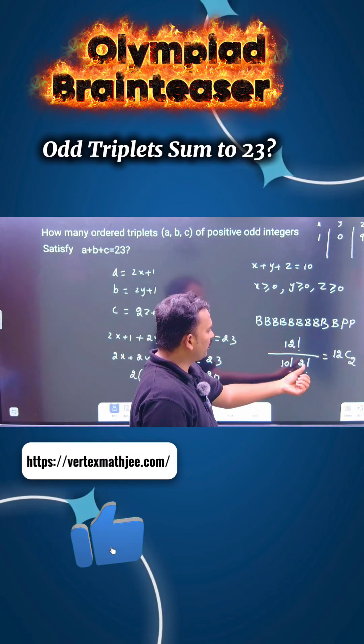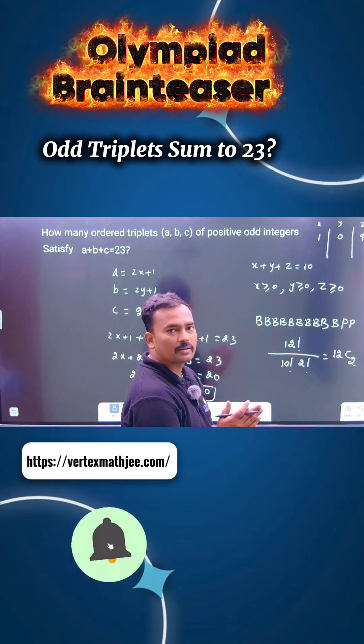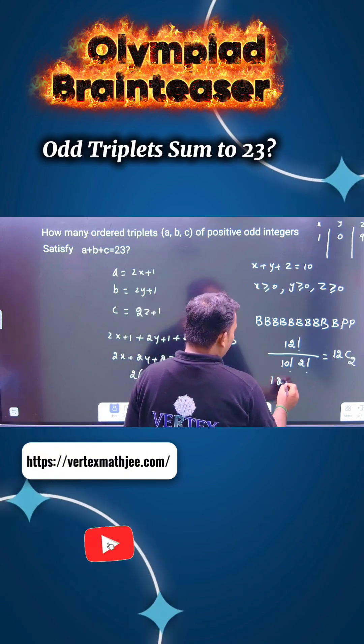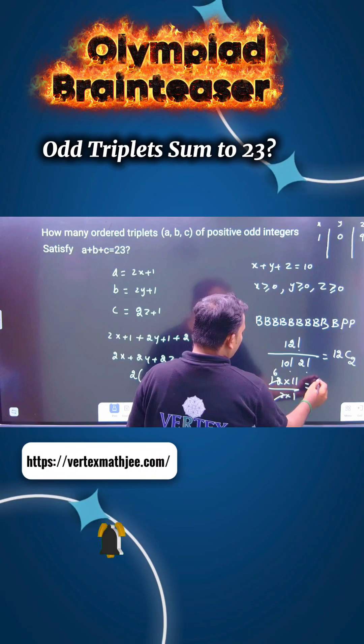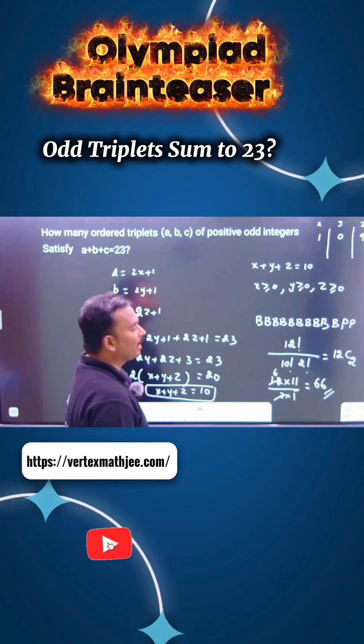12 factorial by 2 factorial, 12 minus 2 is 10 factorial. 12C2 chances there. 12C2 means 12 into 11 divided by 2 into 1. 6 times 11, 66 possibilities there. I hope everyone understands.